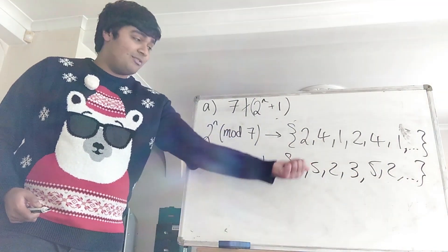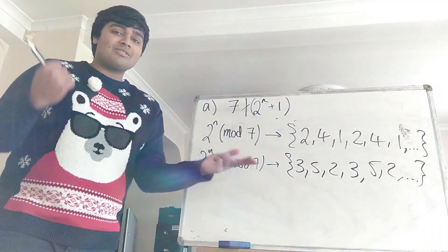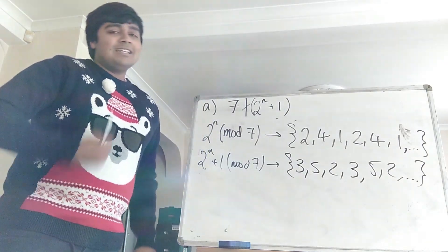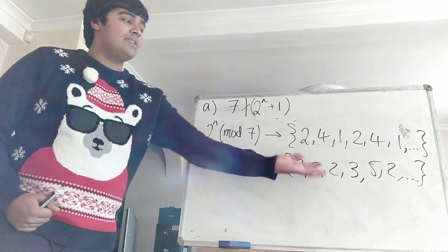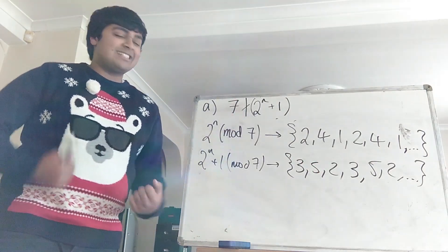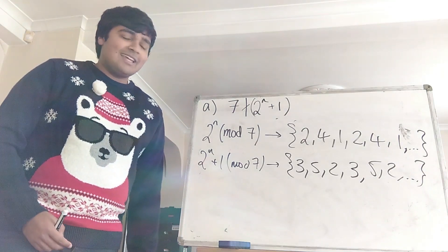But notice in particular none of those numbers 3, 5 or 2, they're not 0 in mod 7. So in particular none of these numbers here leaves 0 when you divide by 7. So none of these here are multiples of 7. And that proves this result here that 7 never divides 2 to the n plus 1.